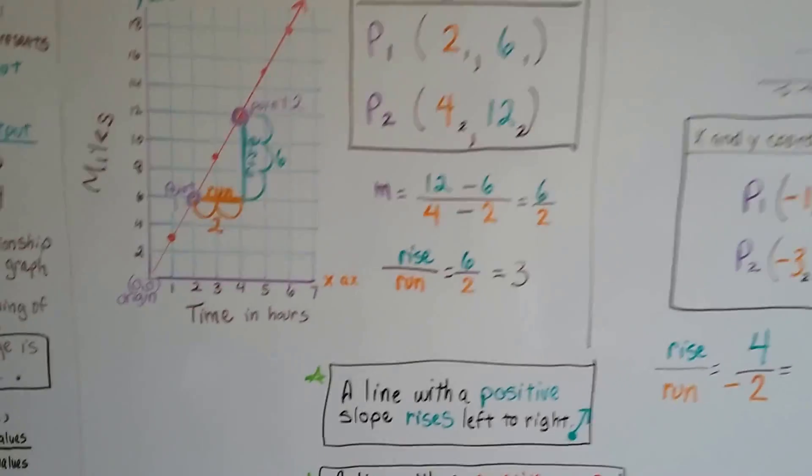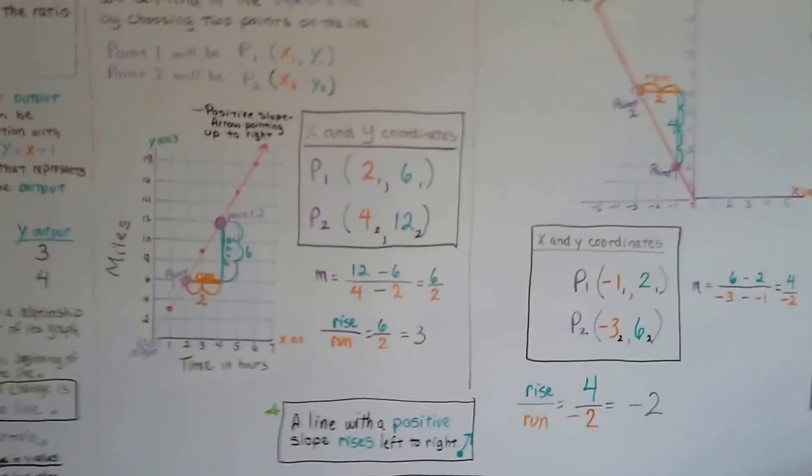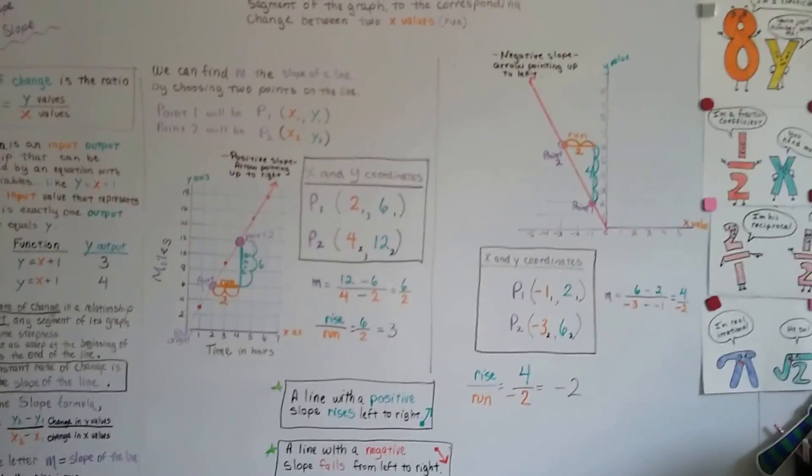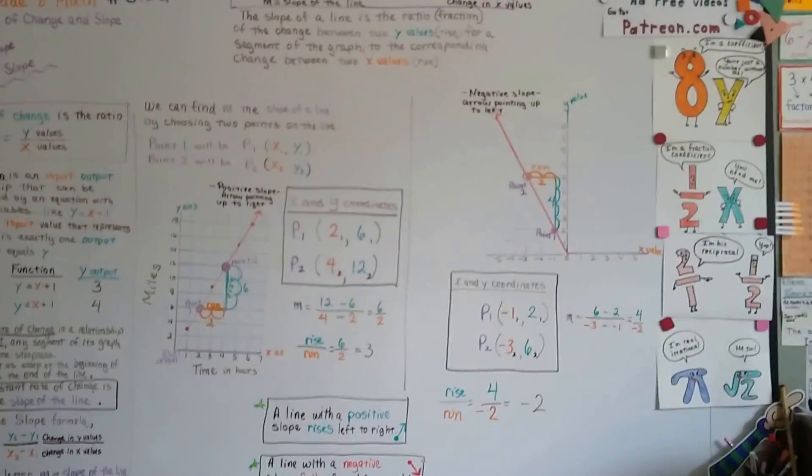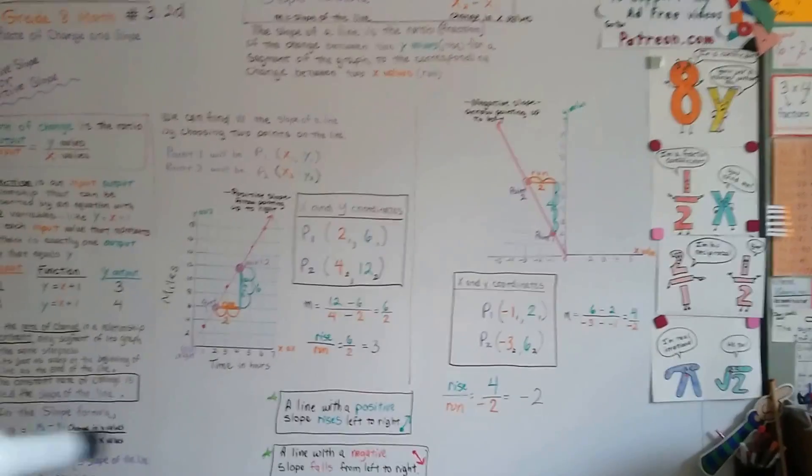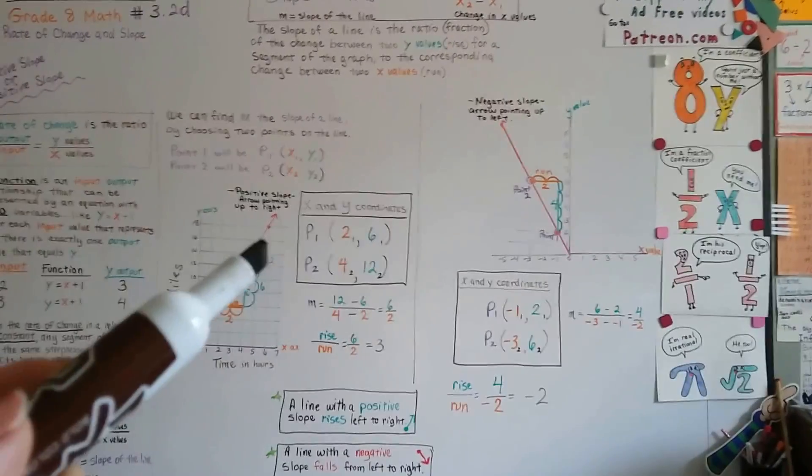So I hope this helped you. We're not going to get in too much more deep into this. It wasn't even part of the lesson, but I thought I'd throw that in because I wanted you to know that you could just look at a line and tell if your answer, the slope, is going to be a negative or a positive.